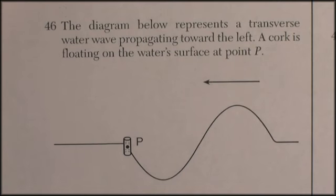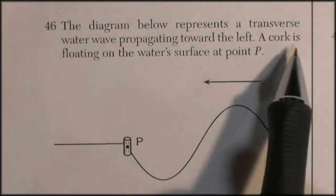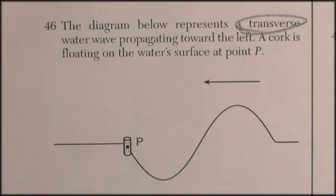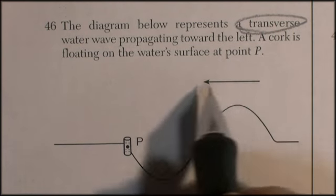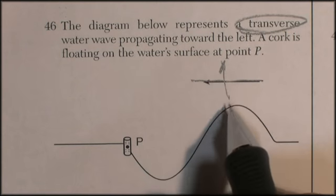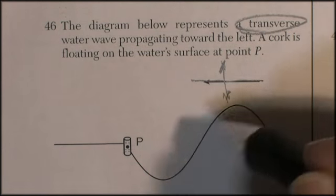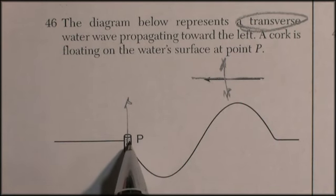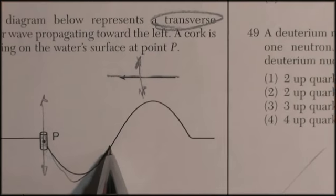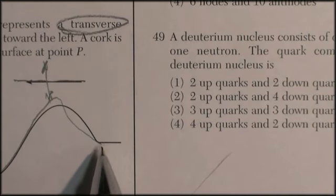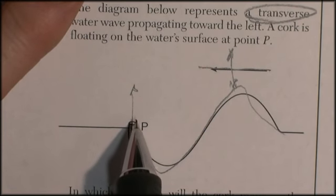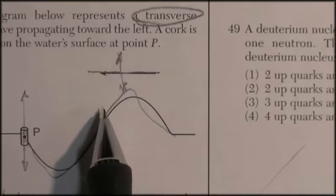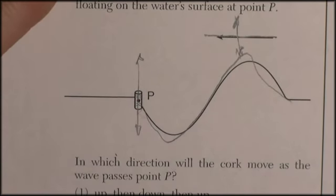Question 46: the diagram represents a transverse water wave propagating towards the left, a cork is floating on the water. Transverse—the key vocabulary word is perpendicular. If the wave is going this way, then the material is going up and down. At point P, the material is either going to go up or down. Here's a cork. If this wave is heading towards this cork, it's going down. The wave would have to go down, then up, then down again.